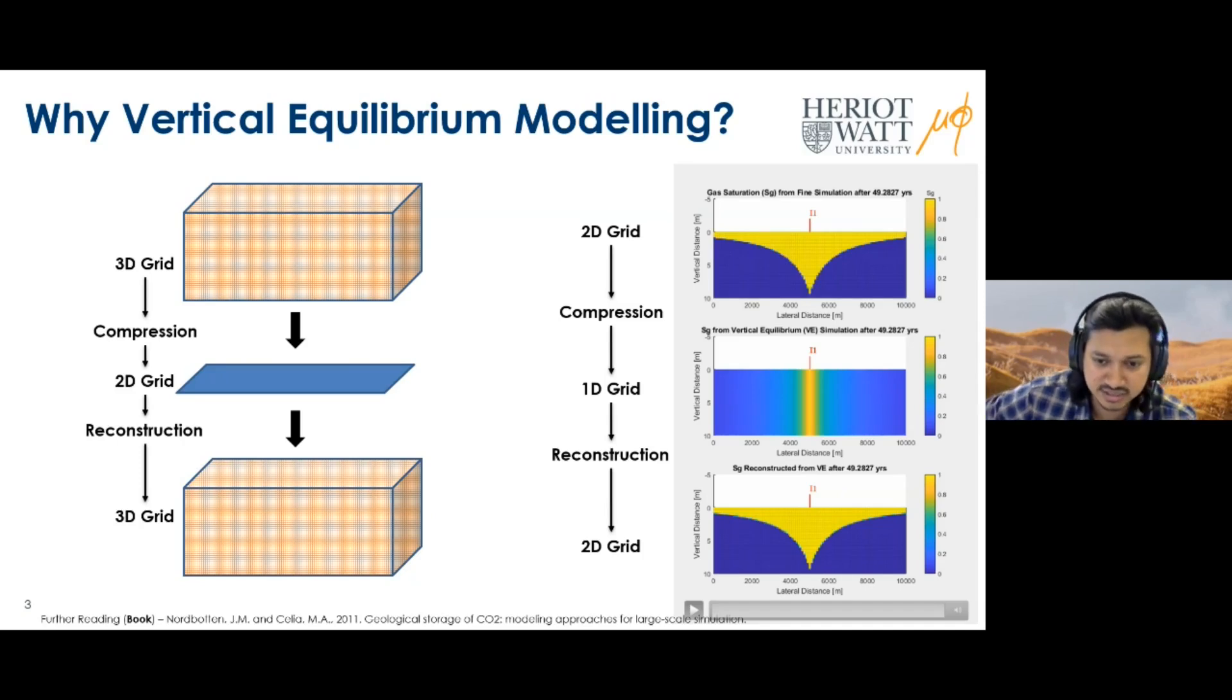The takeaway is that despite the reduction in dimensions, the upscaled variables implicitly capture all the behavior of the full system, and the simplification reduces computational costs substantially. But there's one issue: the key assumption is there's rarely any vertical flow in this model. However, when you introduce a fault in the reservoir, there will be substantial vertical flow. The question arises: how do we account for this in the vertical equilibrium modeling approach? We'll explore this with a multi-scale modeling approach.